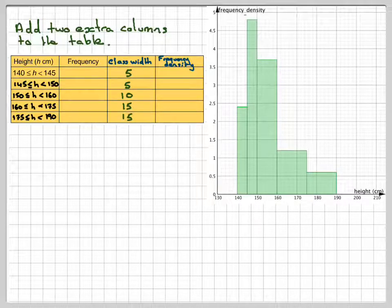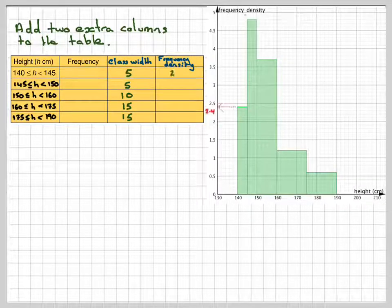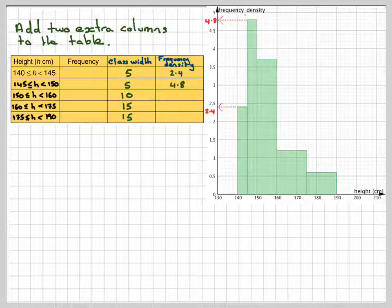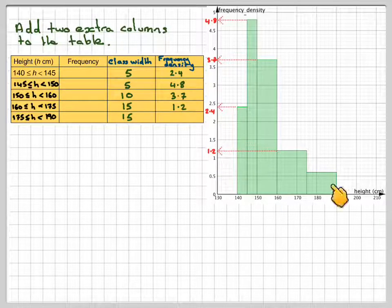What we also need to do is read off the corresponding frequency density. So this one is 2.4, this one is 4.8, this one is 3.7, this one is 1.2, and the final one is 0.6.